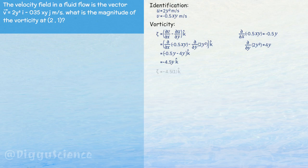At (2,1), the y value is 1. Zeta is equal to minus 4.5 k hat.